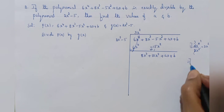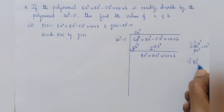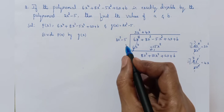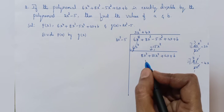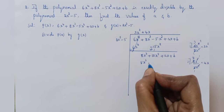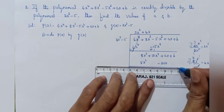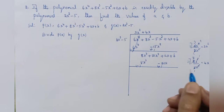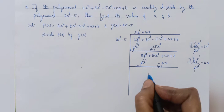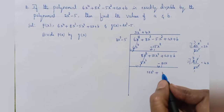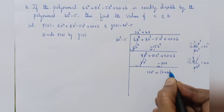Now divide the first term of the dividend 8x cube by 2x square. Cancel x square — the remainder is 4x. Write 4x in the quotient place. Multiply 2x square minus 5 by 4x: 8x cube minus 20x. Change signs: cancel plus 8x cube minus 8x cube. Then 10x square plus ax plus 20x — take x as common factor — giving a plus 20 into x plus b.